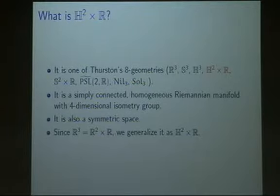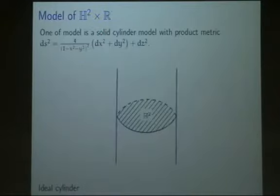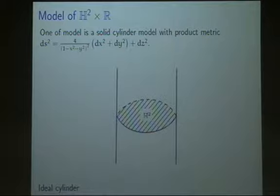In Euclidean space, we can consider ℝ³ as ℝ² × ℝ. So we change the Euclidean plane by the hyperbolic plane — in some sense, this is a generalization of Euclidean space. Since the hyperbolic plane has several models, H² × ℝ also has several models. In this talk, I use the cylindrical model, taking the Poincaré disk model for H². The whole space is a solid cylinder, and its boundary is called the ideal cylinder.